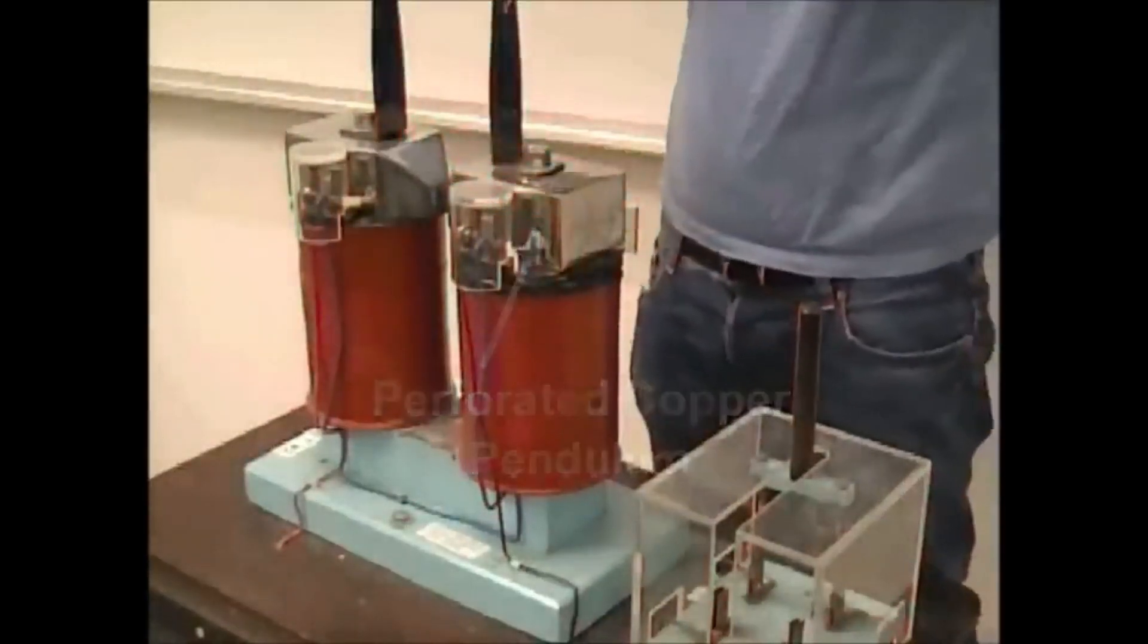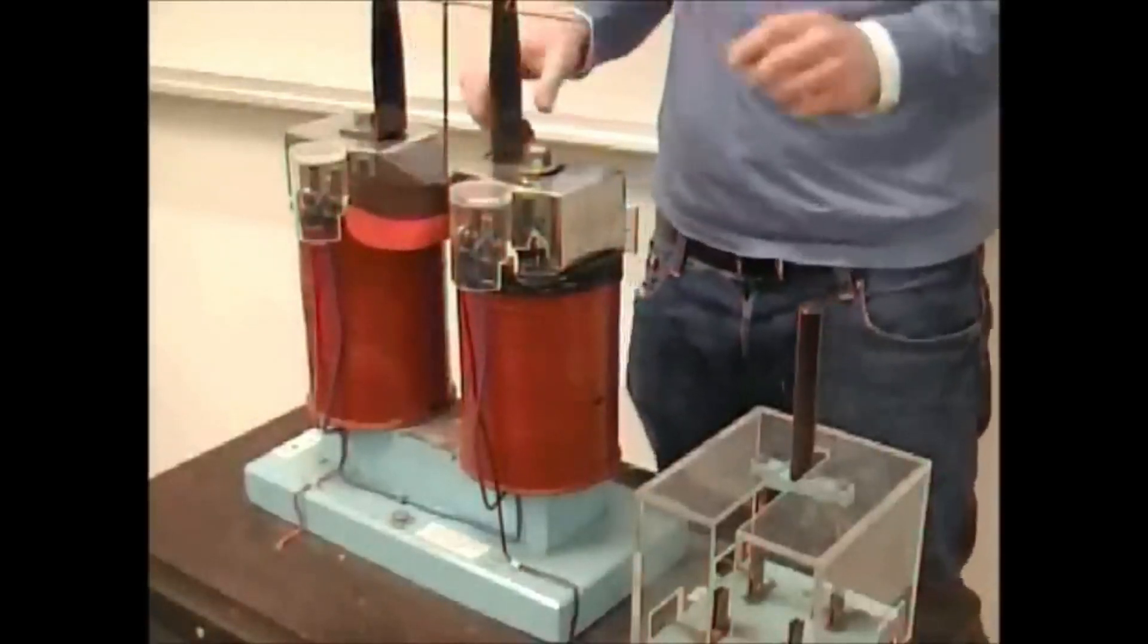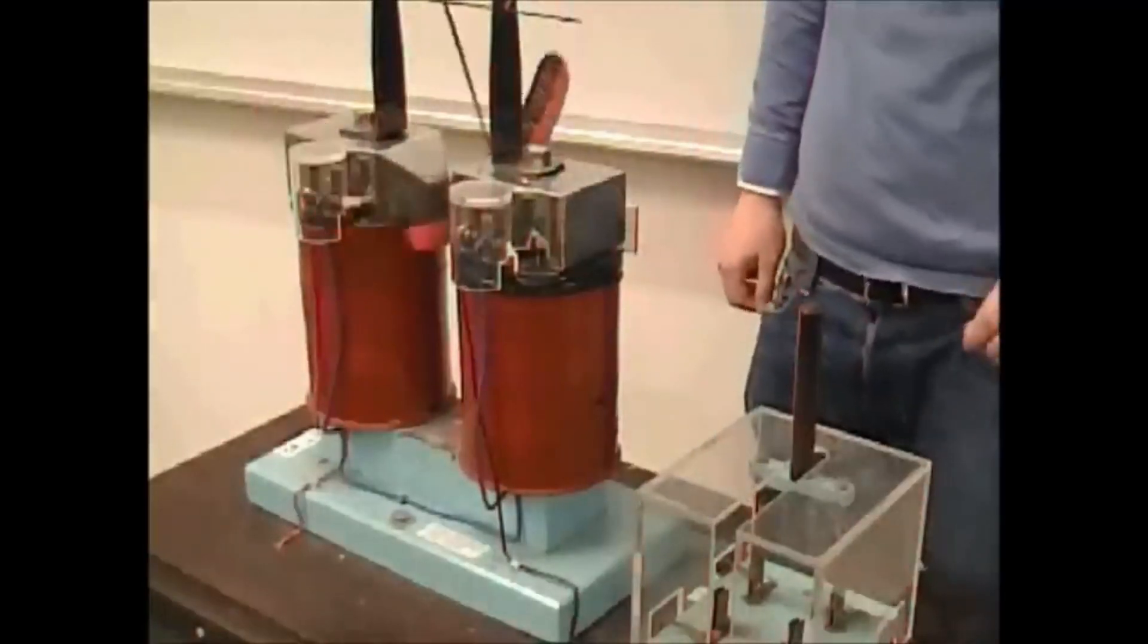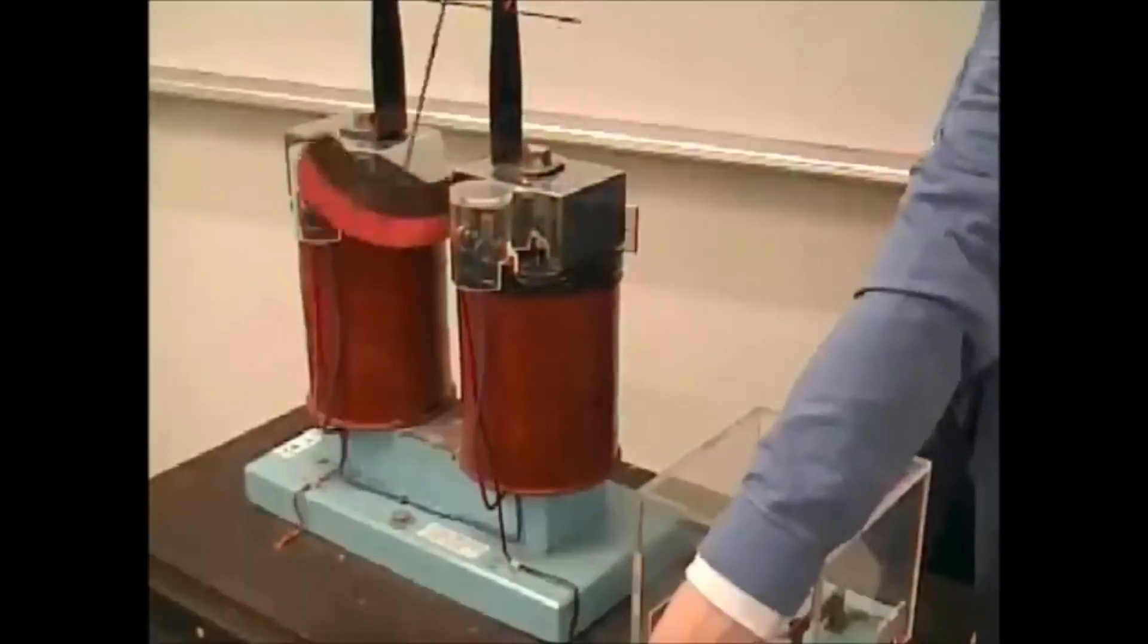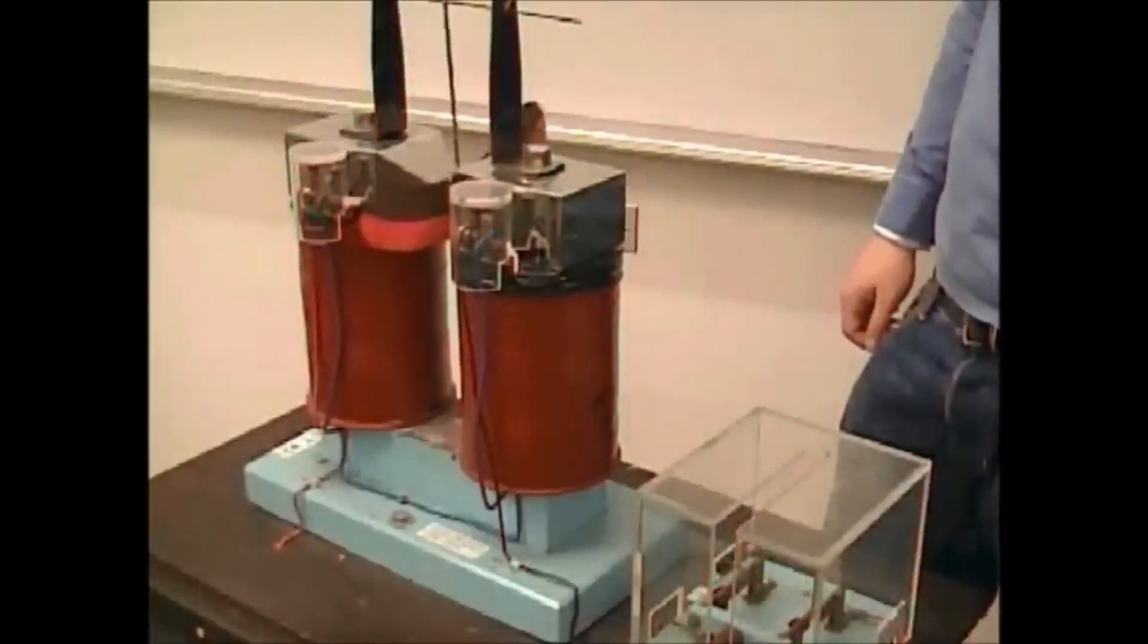As your magnet slows down, it stops generating as much current, which reduces the resistance acting on the magnet's movement. Gravity speeds the magnet back up again until it reaches a happy medium speed. Basically, your magnet is creating a whirlpool of electrons around it as it falls through your pipe.